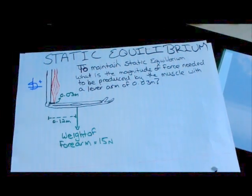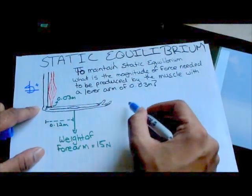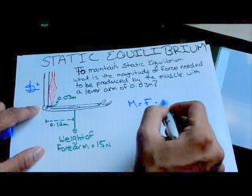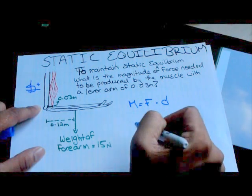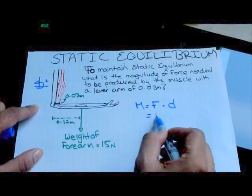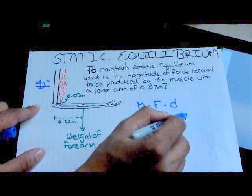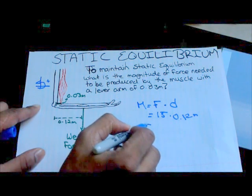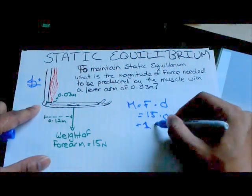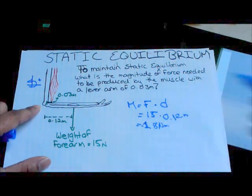So we've got to first calculate what the moment is which the forearm is producing. We know moment is equal to force, magnitude of the force multiplied by the lever arm or the moment arm, which is the perpendicular distance. So the force, the weight of the forearm, is given as 15 Newtons. So 15 Newtons times the perpendicular distance here, which is 0.12 meters. This will give us a grand total of 1.8 Newton meters. And since this is creating a negative moment, it will be negative 1.8 Newton meters.